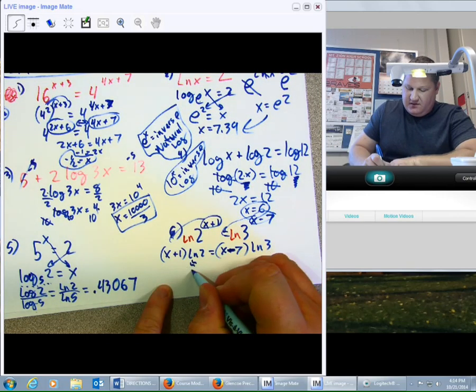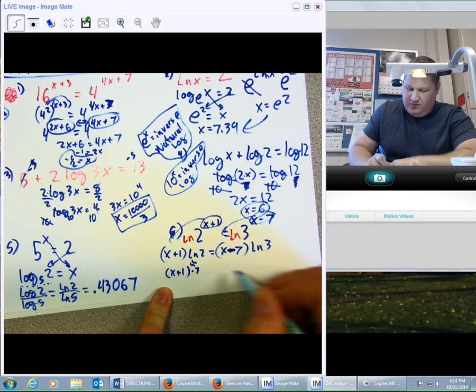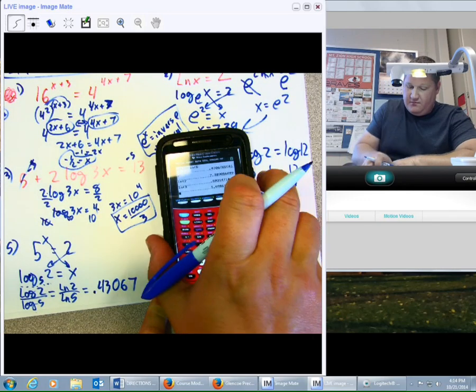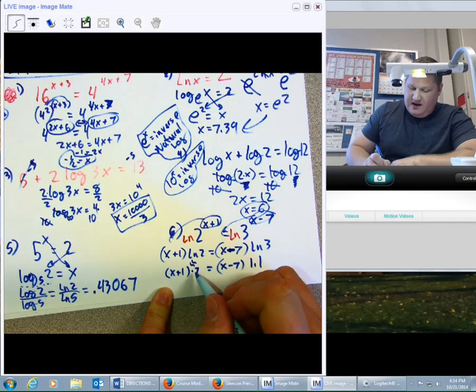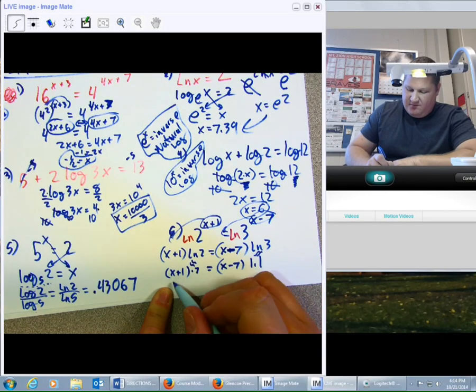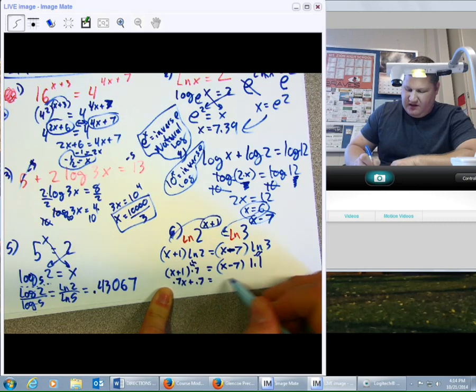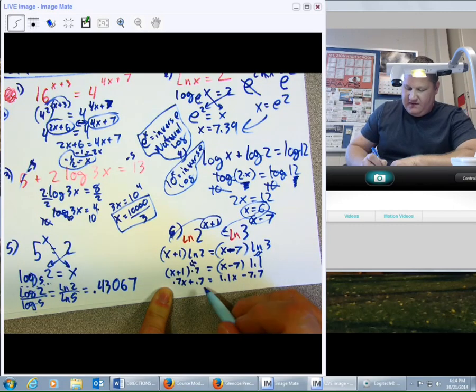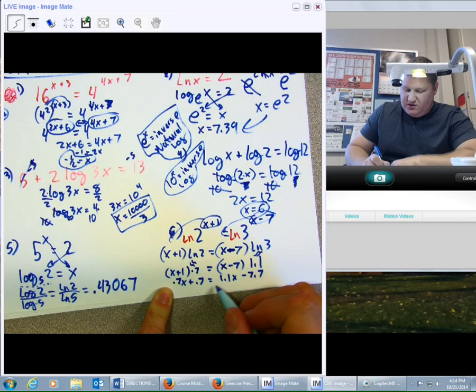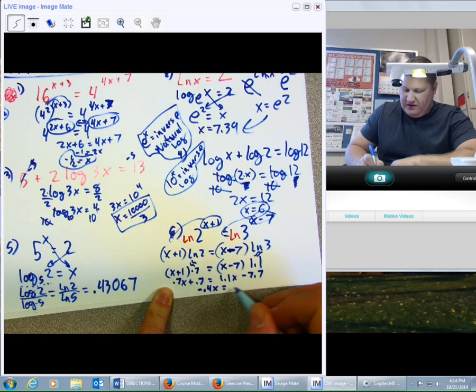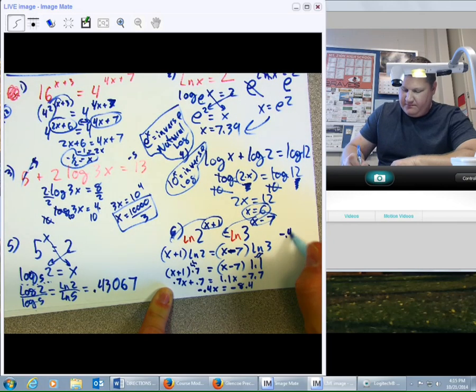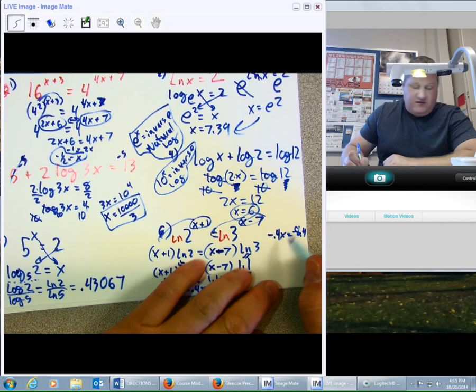So, that is approximately 0.7 times x plus 1 equals x minus 7 times natural log of 3. That's 1.1. So, now I'm going to give it away. So, I'm going to say 0.7x plus 0.7 equals 1.1x minus 7.7. At this point, I'm going to go ahead and subtract and reduce. Get everything to one side. I get negative 0.4x equals negative 8.4. And so, I divide both sides by negative 0.4.